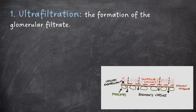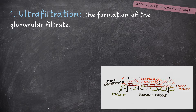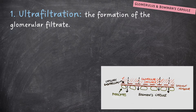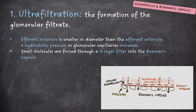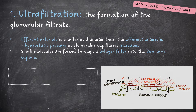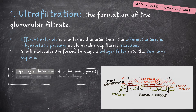So, what happens first? First of all, we have ultrafiltration, i.e. the formation of the glomerular filtrate, which occurs at the glomerulus and Bowman's capsule. Here I've drawn a diagram just to visualise this a bit more easily. We have the glomerular capillary, as well as the capillary endothelium. We have a basement membrane and cells called podocytes, as well as the Bowman's capsule. The efferent arterial is smaller in diameter than the afferent arterial, meaning that the hydrostatic pressure in the glomerular capillaries increases. Small molecules are forced through a three-layer filter into the Bowman's capsule. They are forced through the capillary endothelium, which has many pores, the basement membrane, which is made of collagen, and podocytes, which line the Bowman's capsule. Larger proteins and red blood cells are too large to pass through.